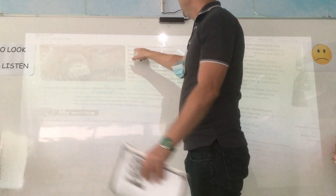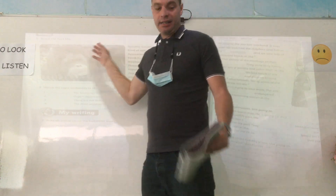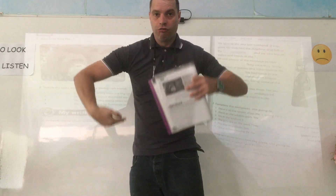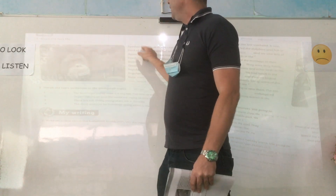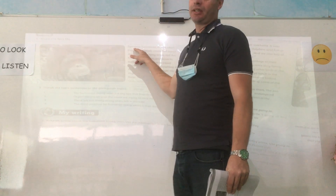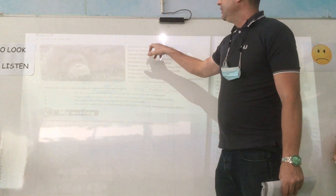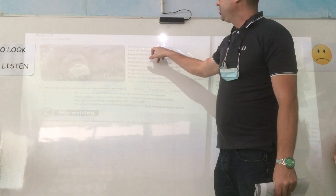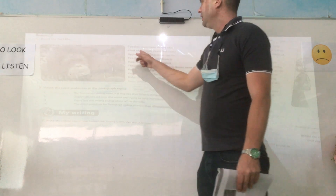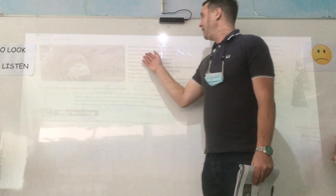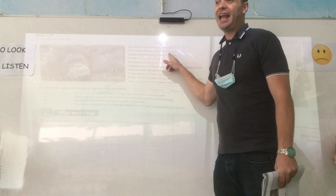So first, the species. It's an orangutan — the Sumatran orangutan. And what kind of animal is it? It's a mammal, an ape.